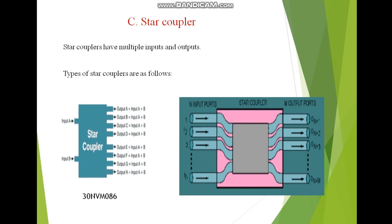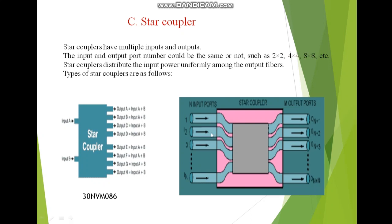Next is my star coupler. By the name we get what is the significance of star coupler - it is having multiple inputs and multiple outputs. This figure shows n number of input ports and m number of output ports. Star coupler has multiple inputs and outputs. The input and output port number could be the same or not. For example, we can have 2x2, 2x4, 4x4, 8x8 different types of star coupler. The role of star coupler is to distribute the input power uniformly among the output fibers.